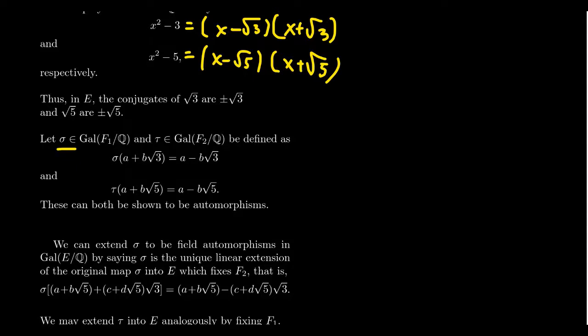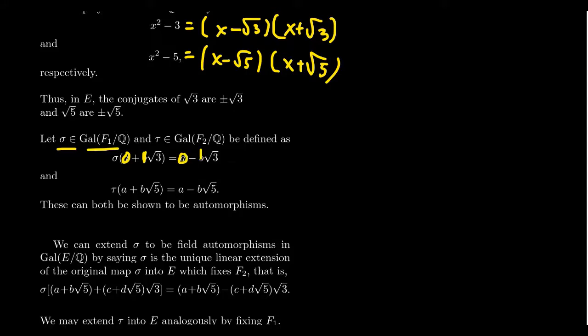Let's define the map sigma belonging to the Galois group of F₁ over Q as follows: sigma maps a + b√3 to a − b√3. So basically sigma is mapping √3 to its negative. If you take a = 0 and b = 1, sigma maps √3 to −√3. Sigma is the linear extension — the map where we fix all of the rational numbers and just move √3 to −√3. Fix the rationals while swapping √3 with its conjugate. That's the natural construction in that situation.